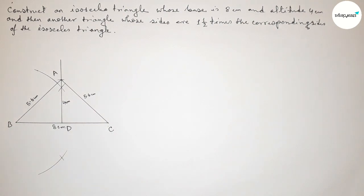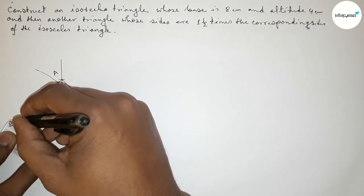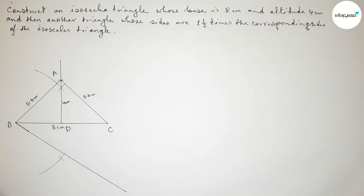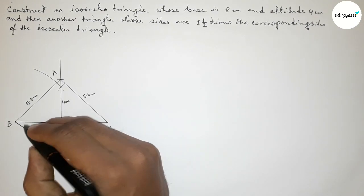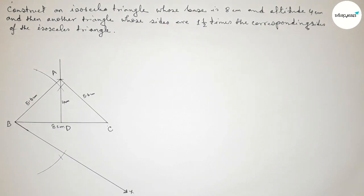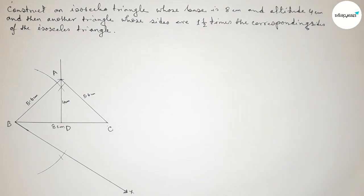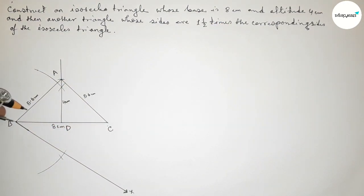Now we have to draw a line from point B at an acute angle with the help of a scale. Drawing a line from point B and marking an arrow and point X. This is an acute angle, that is less than 90 degrees.